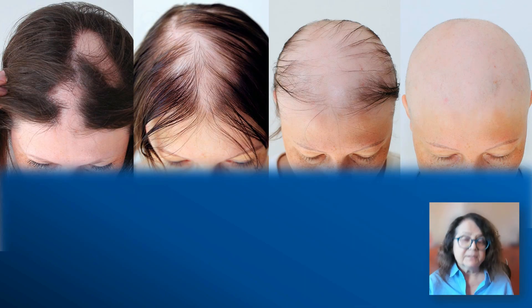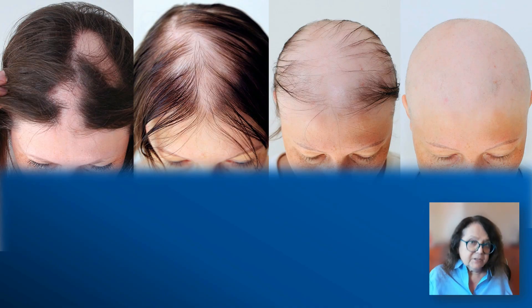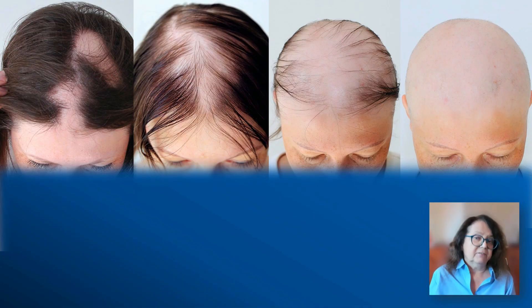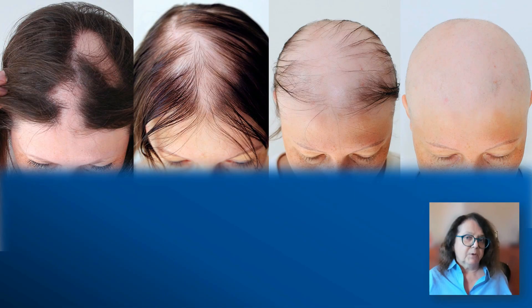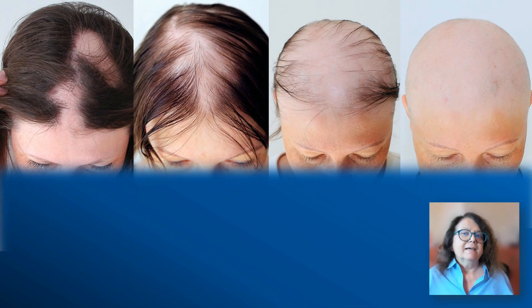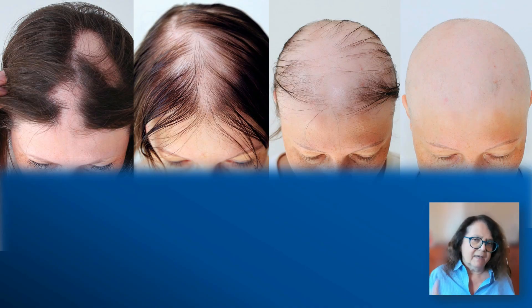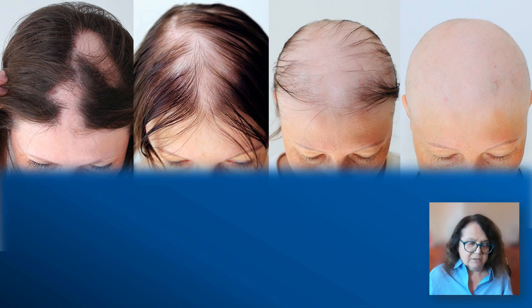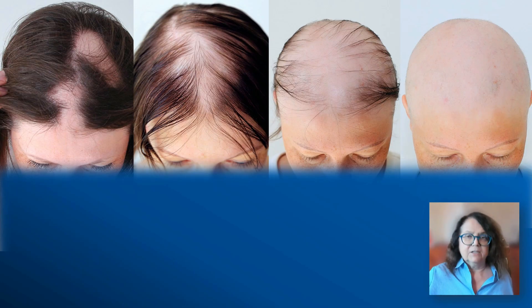We want to start treatment as early as possible for two reasons. First, the later we start, the more severe the disease and the poorer the response. It has been shown that if the patient has a SALT score of 95 to 100, he or she will not respond as well to treatment as patients with a lower SALT score. The other parameter is the parameter of time — the later we start after the most recent episode, the lower the efficacy of the treatment. We calculate this time in months or even in years.